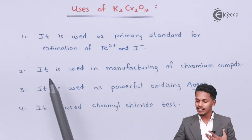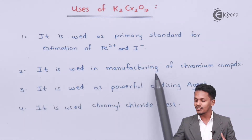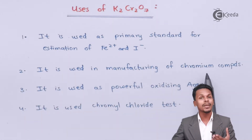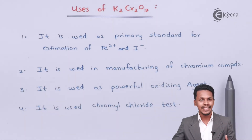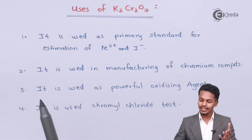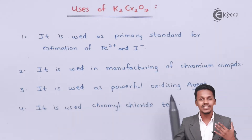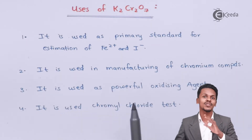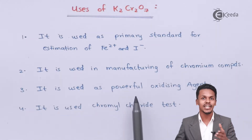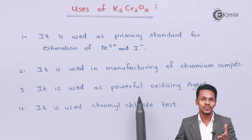Another use is that K₂Cr₂O₇ is used in the manufacturing of chromium compounds. It is also used as a powerful oxidizing agent, as discussed in previous lectures.